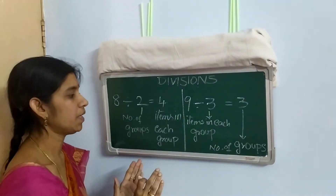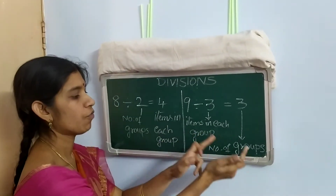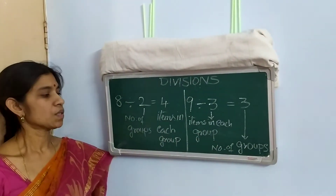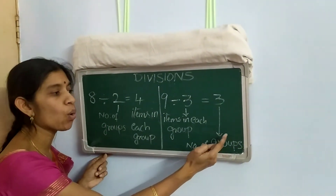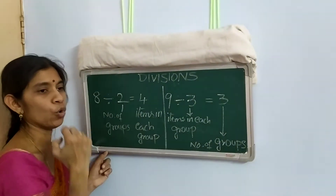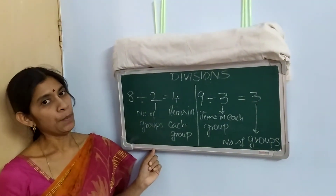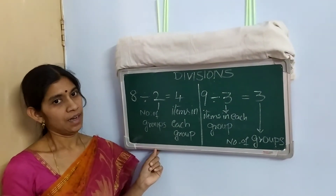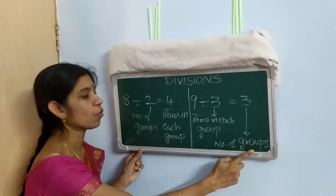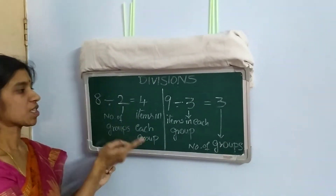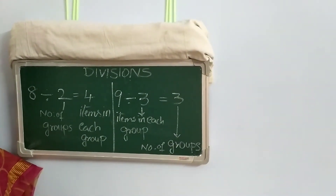Did you observe? I knew the number of items in each group and I could also form the number of groups. So sharing equally or making equal number of groups is known as division, which we learnt in the previous class. Once again: making equal number of groups or sharing equally is called division.